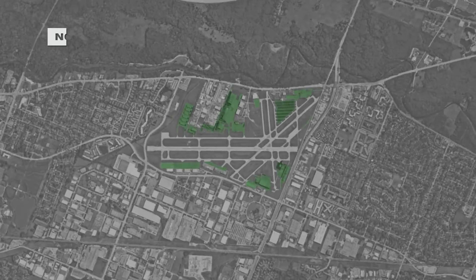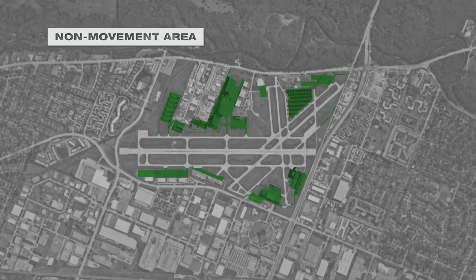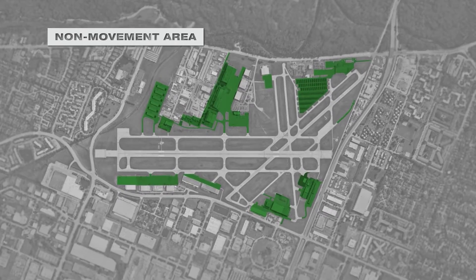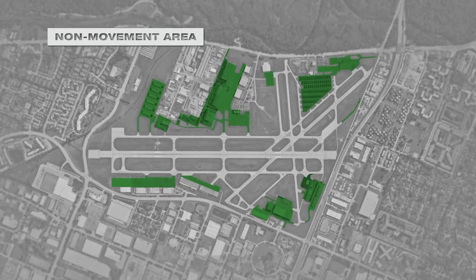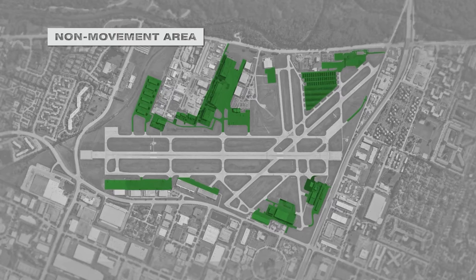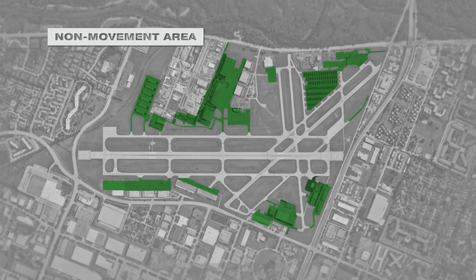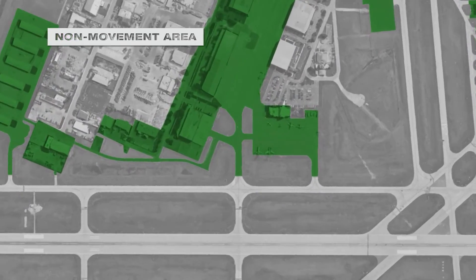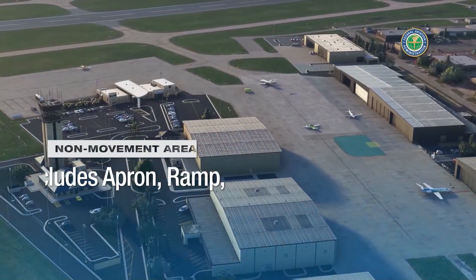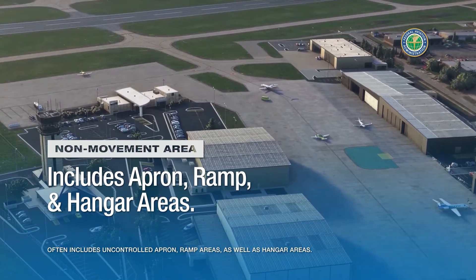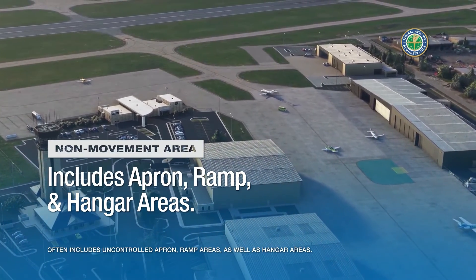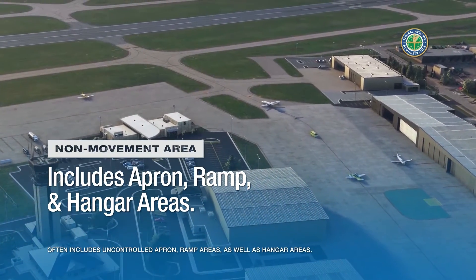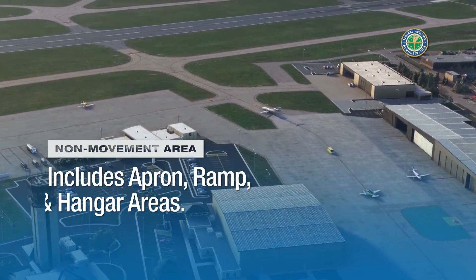The non-movement area is the area used for uncontrolled vehicle operations and loading, unloading, parking, and fueling of aircraft on the airfield. The non-movement area often includes uncontrolled apron and ramp areas, as well as hangar areas.